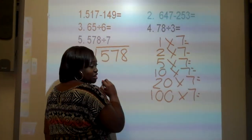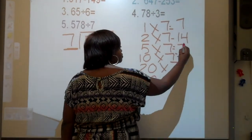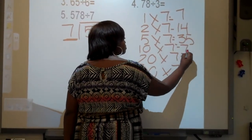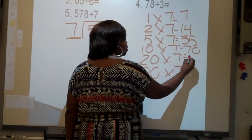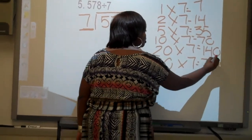1 times 7 is? 7! 2 times 7 is? 35! 70! 40! 140! 700! And 700! Good job!